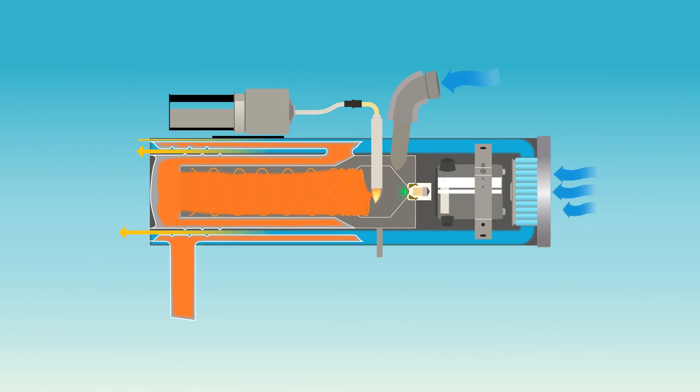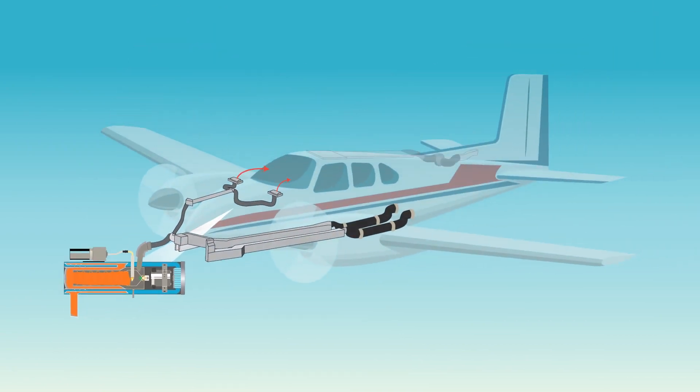Ventilation air flowing over the outside of the combustion chamber and inside the jacket of the heater absorbs the heat and carries it through the ducts into the cabin.